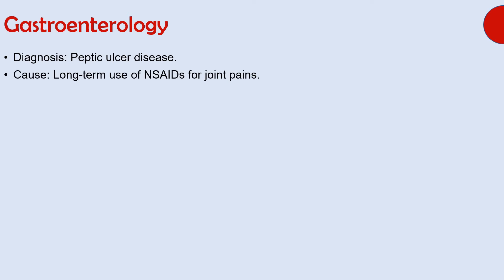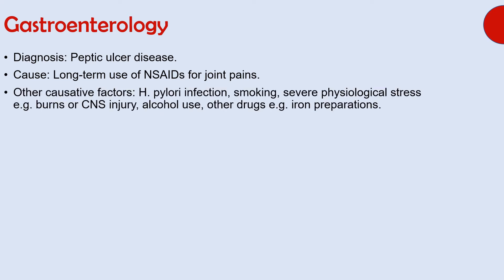The diagnosis is peptic ulcer disease. The cause in this patient is long-term use of NSAIDs for joint pains. Other causative factors for this disease include H. pylori infection, smoking, severe psychological stress such as burns or CNS injury, alcohol use, and other drugs such as iron preparations.